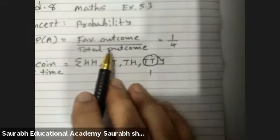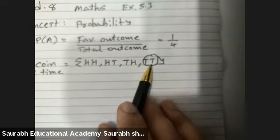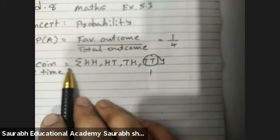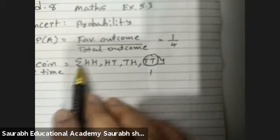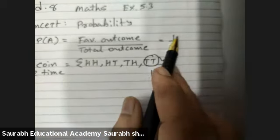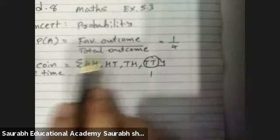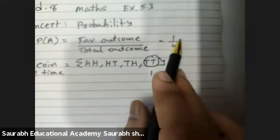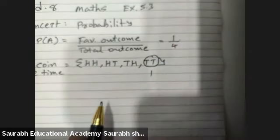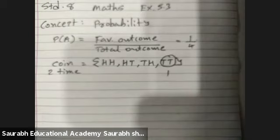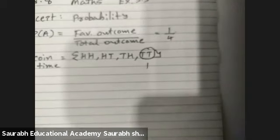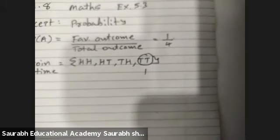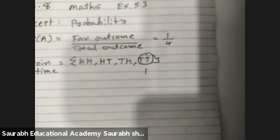Probability of getting two tails out of two coins toss will be one upon four. Total outcome four and favorable outcome one. Understood what probability is?